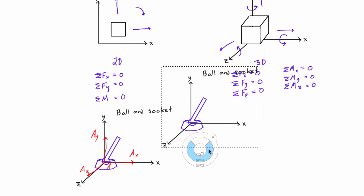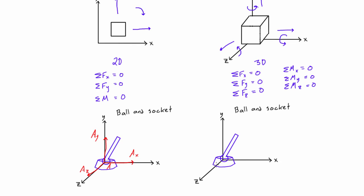If instead we put the ball and socket on rollers, we get a roller support. You can still rotate freely in any direction, and the object can slide in x and z since it's on wheels. The only resistance provided is against downward translation through the floor, giving a reaction force Ay in the upward direction only. If you lift it off the floor, it comes right off.